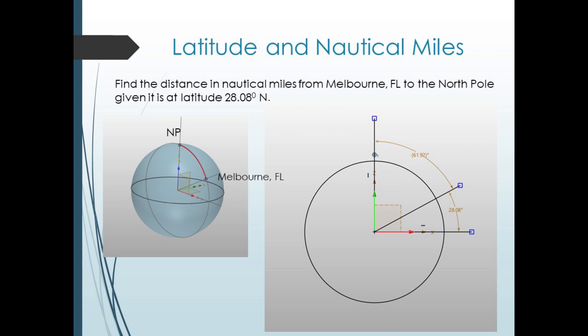Suppose we're given the distance from Melbourne, Florida to the North Pole, given it's located at latitude 28.08 degrees north. 28.08 is the measure from Melbourne down to the equator, so 90 minus 28.08 equals 61.92 degrees is the measure heading due north along the meridian line to the North Pole. The angle is called the co-latitude, co as in complementary angle. But this means the length of the arc in nautical miles is just 60 times the degree measure of the arc. Hence, 60 times 61.92 equals a distance of 3,715.2 nautical miles.